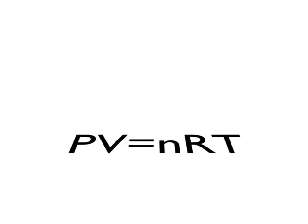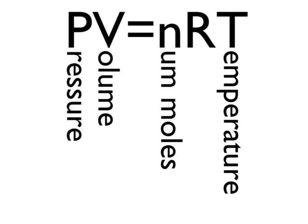The Ideal Gas Law, often written as PV equals nRT, where P is pressure, V is volume, N is the number of moles, and T is temperature.